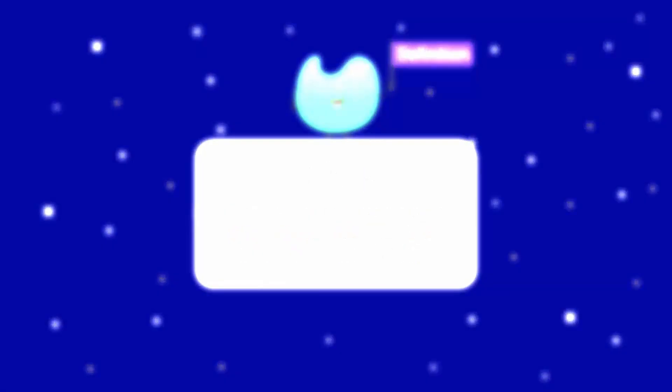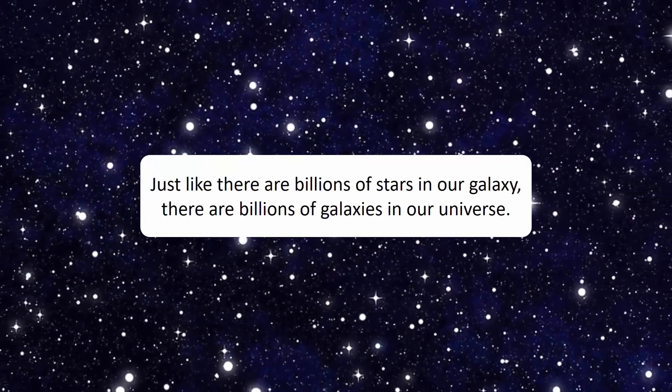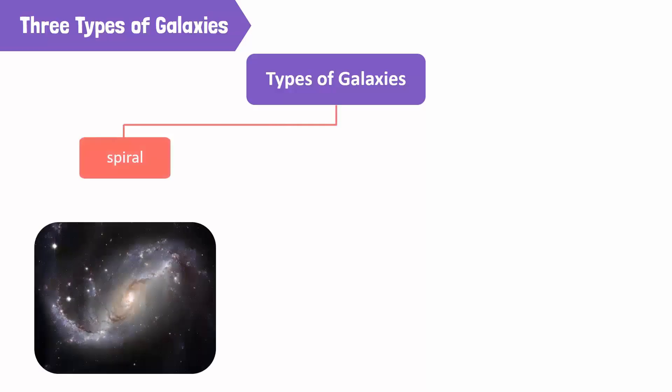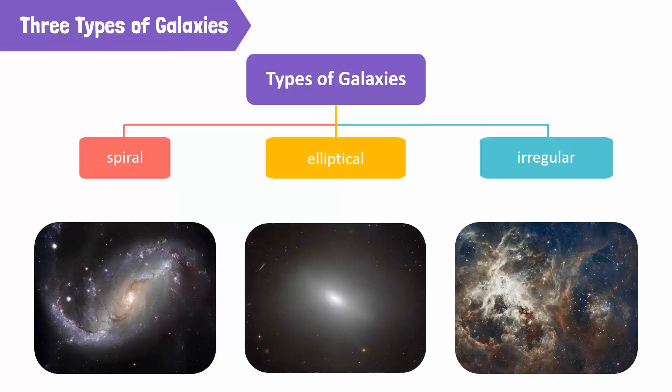Just like there are billions of stars in our galaxy, there are billions of galaxies in our universe. These galaxies fall into three main types based on their shape: spiral galaxies, elliptical galaxies, and irregular galaxies.